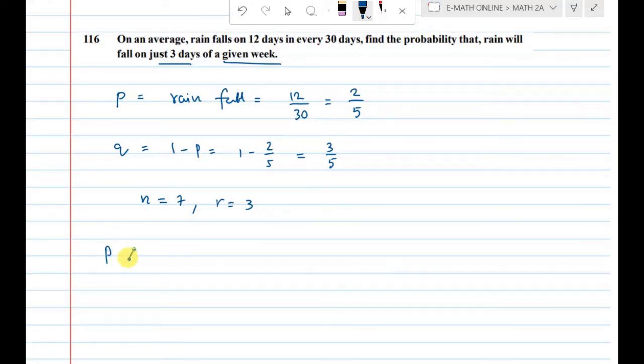To cover this probability, very simple: x equals r equals 3. The formula is nCr times q to the power n minus r times p to the power r. From 7 days, select 3 days, that is 7C3.